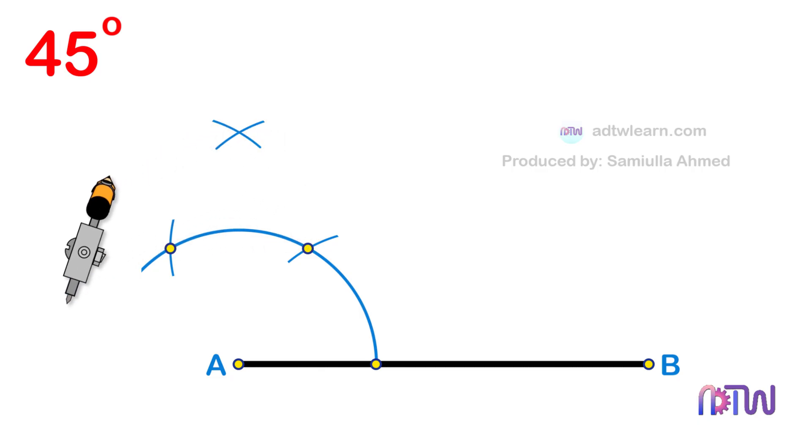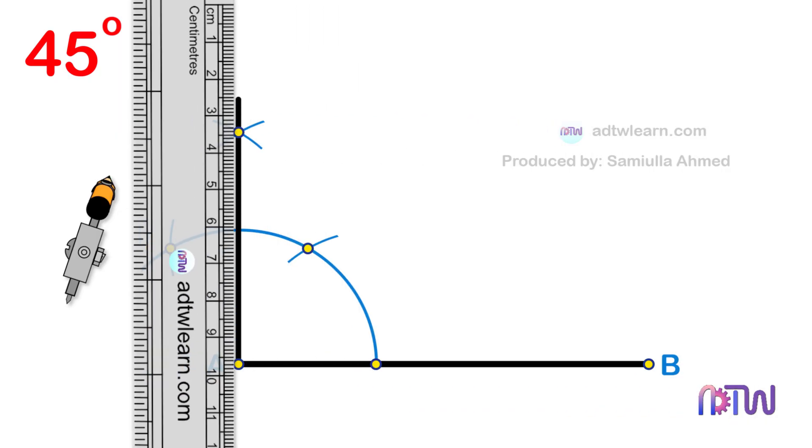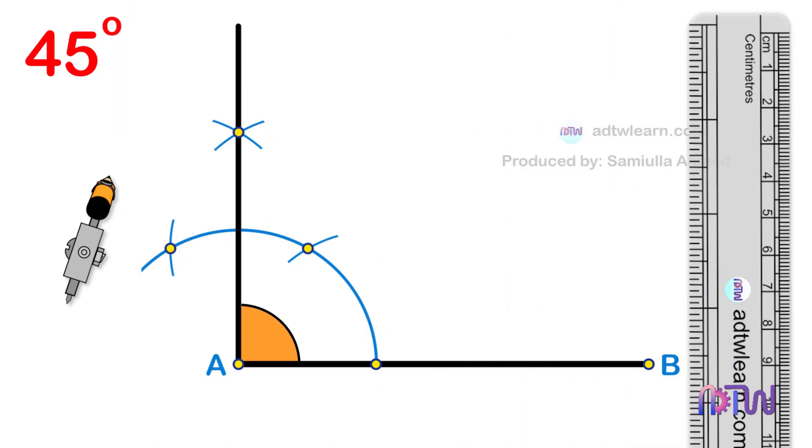Draw a line passing through this point from endpoint A of the line. This angle will be 90 degrees.